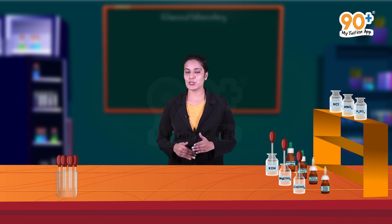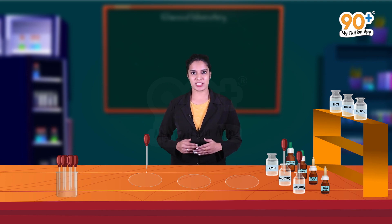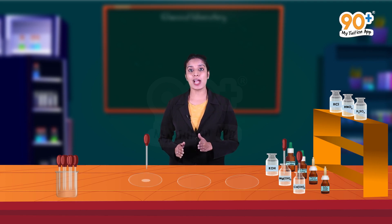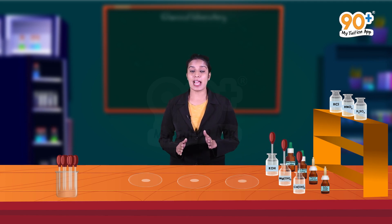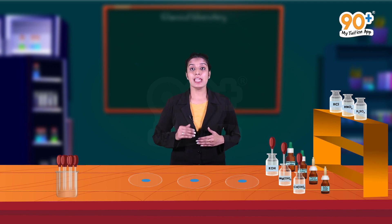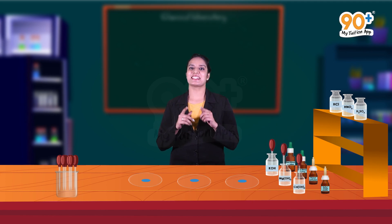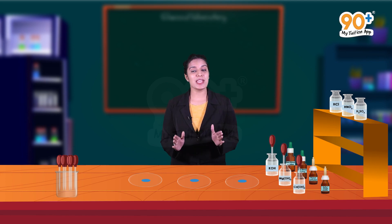Now let's have a look at another set of solutions. Here, we are taking three watch glasses. I am going to add one drop of potassium hydroxide to the first watch glass, one drop of magnesium hydroxide to the second, and one drop of calcium hydroxide to the third watch glass. Now let's add one drop of red litmus solution to all of these. You can see that the red color of the solution changes to blue. It indicates that these solutions are basic in nature.